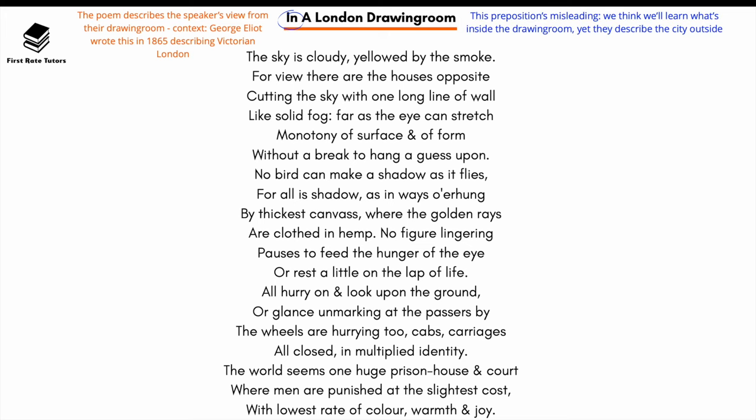The word 'in' — this preposition is somewhat misleading, because we think we'll learn what's inside the drawing room. When we first look at just the title, we're thinking this poem is going to be about what's going on inside this fancy drawing room. However, as we read through the poem, we learn that they're actually describing the city they see outside. This title, especially the reference to 'drawing room,' illustrates just how privileged and sheltered the speaker is from the city's harshness — watching the stark reality of the city from a very comfortable and sheltered view.